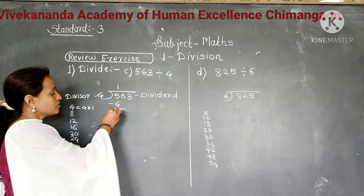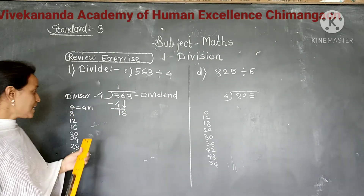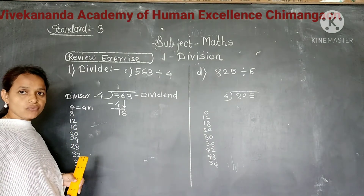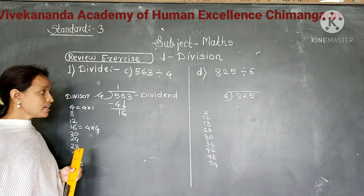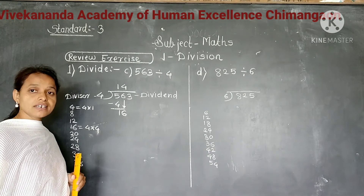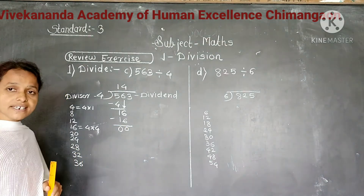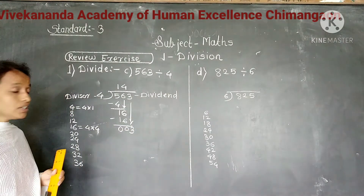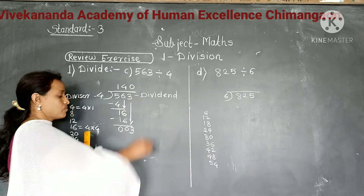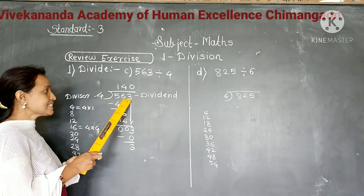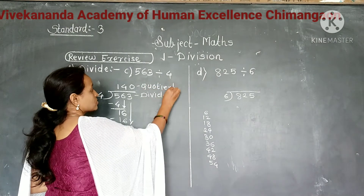Subtract, gives 1. Next digit 6, we bring down to make 16. Now we divide 16 by 4. And 16 comes in the 4th place of the multiplication table of 4. So we divide 16 by 4, it gives 4 as a quotient. Write 4 as a quotient and write product 16 below 16. Subtract, it gives 0. Now next digit 3, we bring down. We divide 3 by 4. But 3 is less than divisor 4, so quotient is 0. So dividing 563 by 4 gives 140 as a quotient and 3 as a remainder.